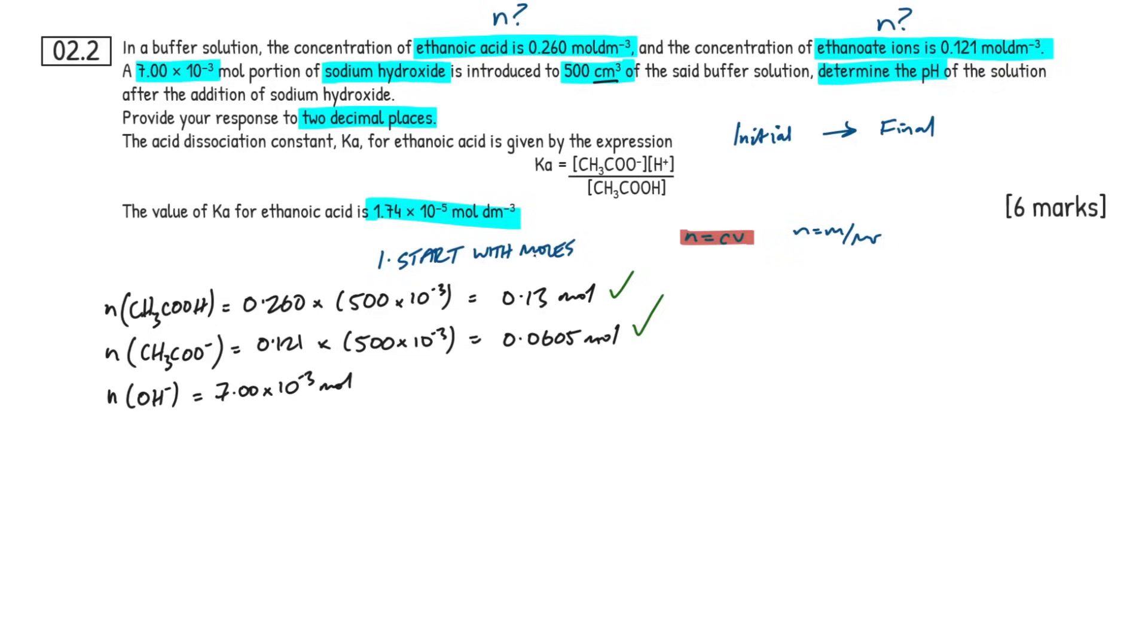So I'm going to write that right here. Make a note of it. Moles of the hydroxide ion that's added, the strong base here, 7.00 times 10 to the minus 3 mole. No marks allocated here because it's given in the question. So we've started with the moles, right? Let's look at what step two is. So step two of any buffer calculation. This is going to be really important to remember.